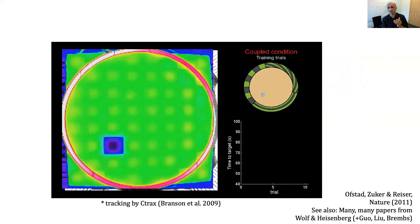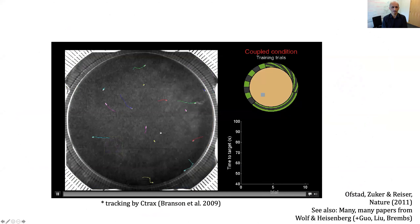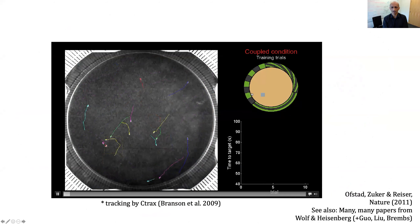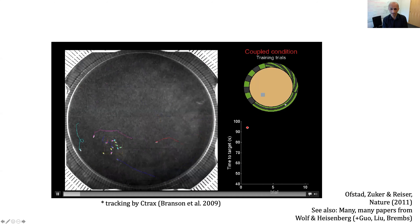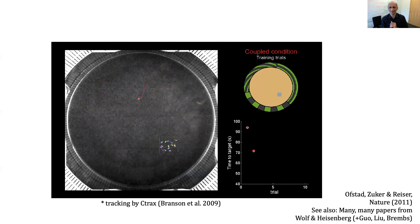Finally, here's a gorgeous example of place learning from Michael Reiser's lab — a grad student Tyler Ofstad did these experiments. It's the Morris water maze for the fly: instead of a hidden platform, there's a cool spot. Over many trials, the fly learns to associate the visual surroundings with the presence of that cool spot, so that when the visual surroundings shift and the cool spot shifts with it, the fly finds its way to that spot faster and faster.